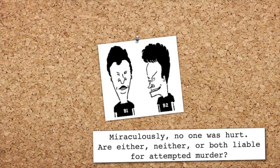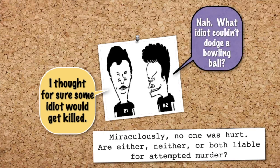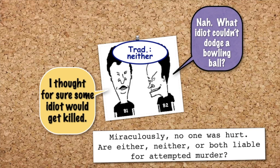Well, we need more facts. B1 says, 'I thought for sure some idiot would get killed.' B2 says, 'Nah, what idiot couldn't dodge a bowling ball?' Under the traditional doctrine that purpose to cause death must be shown, both should be acquitted if their stories are believed. It is not B2's purpose to cause death. B1 is evidently indifferent whether or not death results, although he expresses surprise that no harm resulted. If a jury doubts that B1 cared one way or another, it should acquit. The Model Penal Code, however, gives us a different result in B1's case.